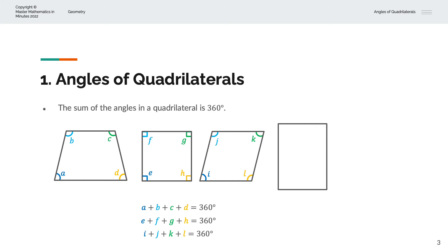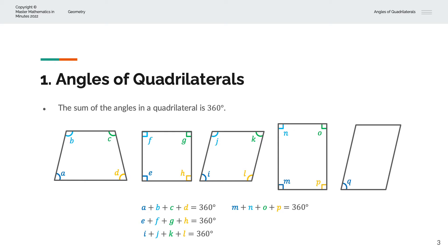The next example is a rectangle, with angles M, O, P. And once again, the sum of all of these is 360 degrees. And lastly, we have a parallelogram, with angles Q, R, S, T. And the sum of all of these angles is also 360 degrees.